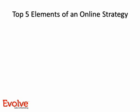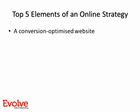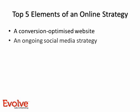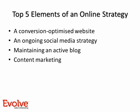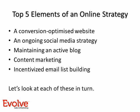So let's look at what are the top five elements of an online strategy: a conversion-optimized website, an ongoing social media strategy, maintaining an active blog, content marketing, and incentivized email list building. Let's look at each of these individually.